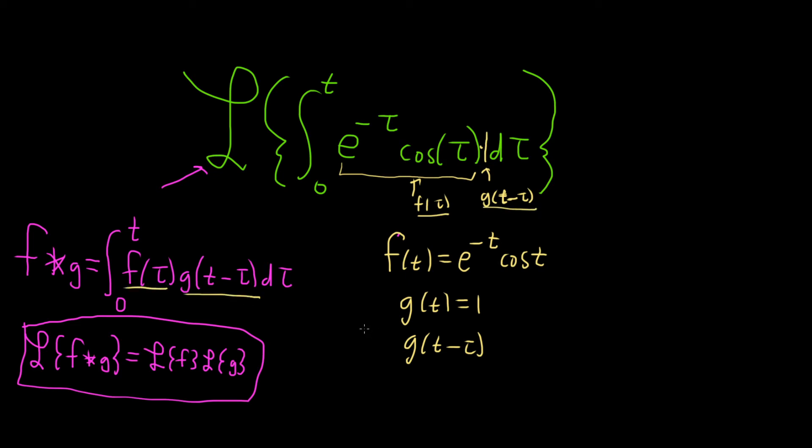So now we can use the convolution theorem which says this is the Laplace of f, which is e to the negative t cosine t, times the Laplace of g, which is just going to be one.